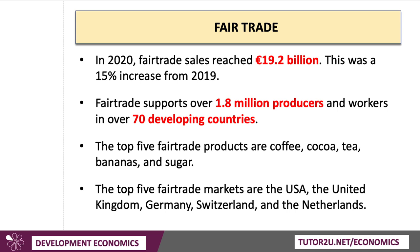Sales of fair trade food just before the pandemic reached just under 20 billion euros per year — that was up by 15% from the year before. Fair trade now supports nearly 2 million producers and workers in over 70 developing countries, covering products from cocoa to coffee, from bananas to sugar. The biggest fair trade markets are the United States, the UK, Germany, Switzerland and the Netherlands. The fair trade movement has been around for several decades now, with a big commitment to social, economic and environmental justice.